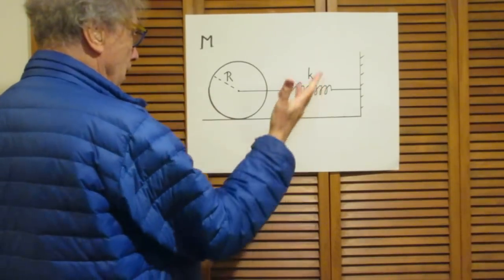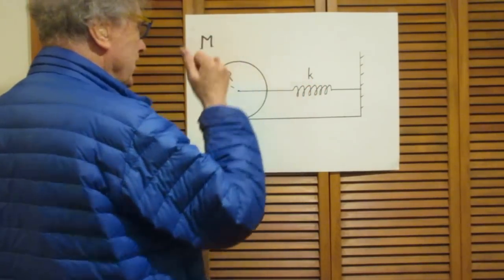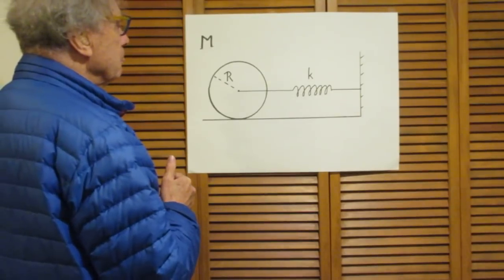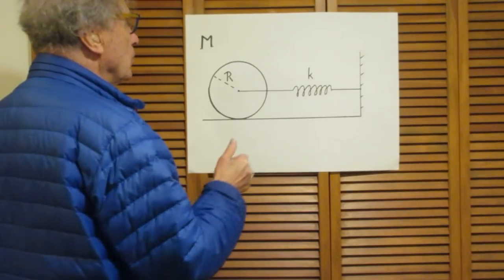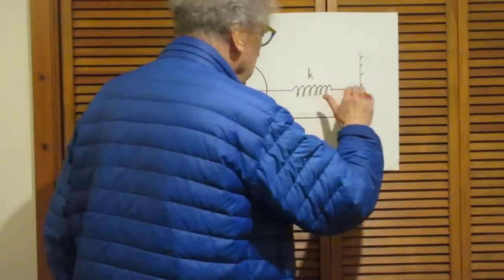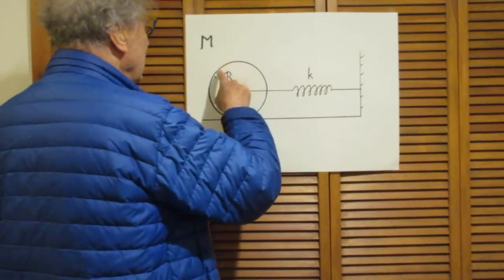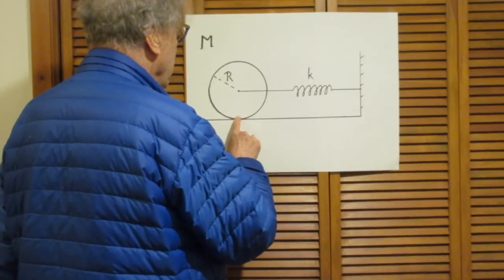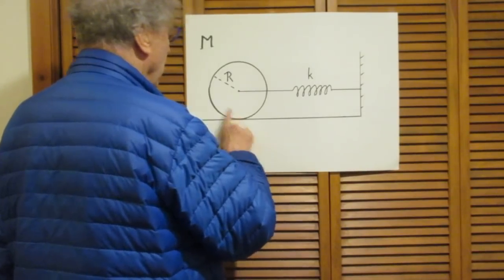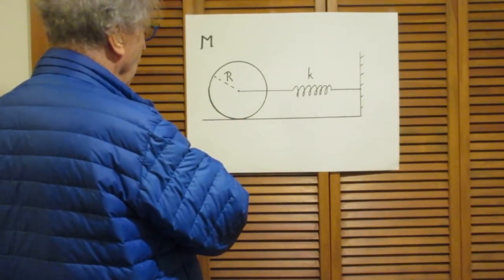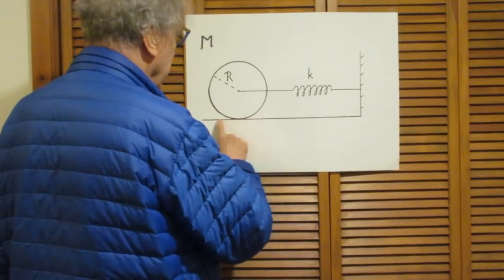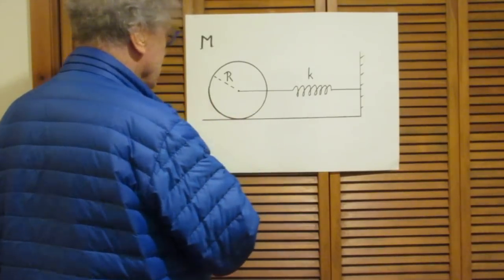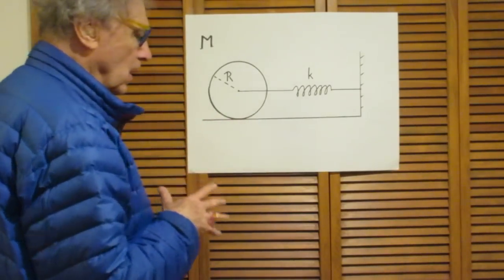The picture as you see it here is such that the spring is completely relaxed and there is no frictional force where the disk rests on the floor. So the whole system is as relaxed as you can imagine.